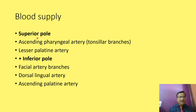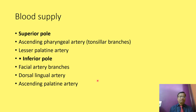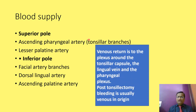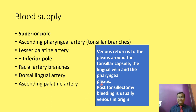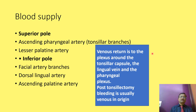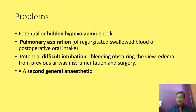The superior and inferior poles of the tonsil are supplied by specific blood vessels. Venous return is via the tonsillar capsular plexus, the lingual vein, and the pharyngeal veins. We must remember that post-tonsillectomy bleeding is usually venous rather than arterial.